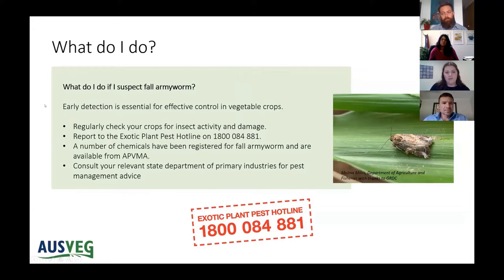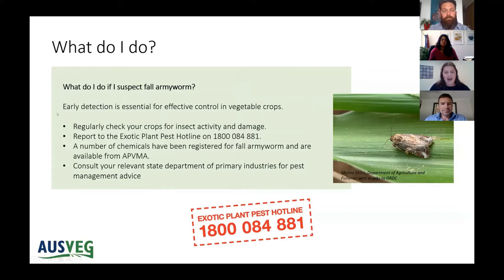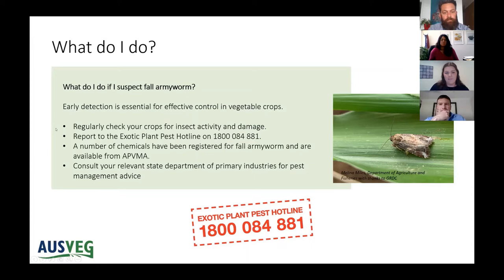If you suspect fall armyworm, early detection is critical for effective control in vegetable crops. Regularly checking your crops is important, but also report to the exotic plant pest hotline. A number of chemicals have been registered for fall armyworm and are available from the APVMA. For more information on pest management advice, please contact your relevant State Department of Primary Industries.